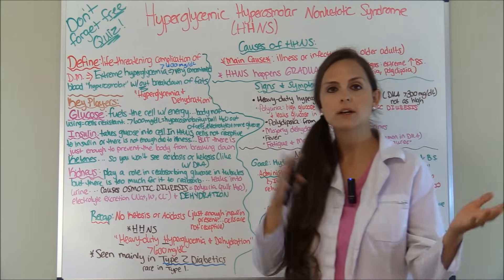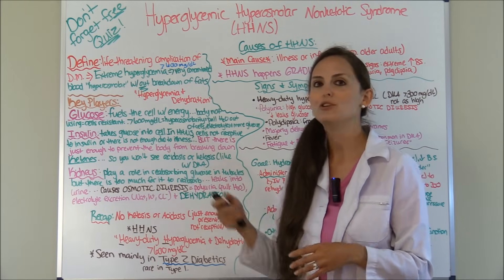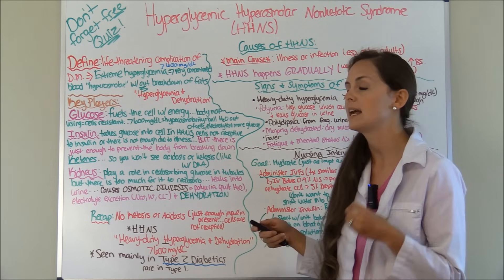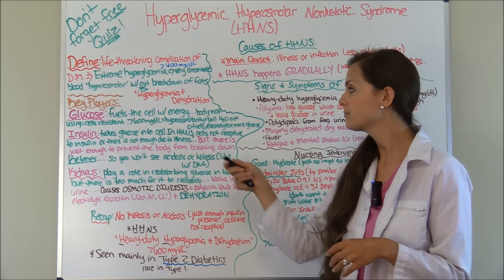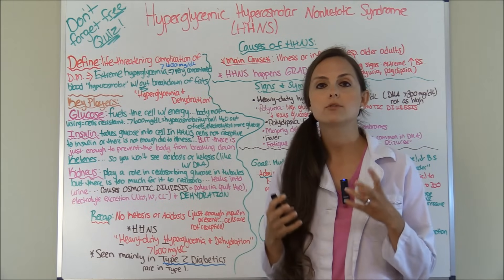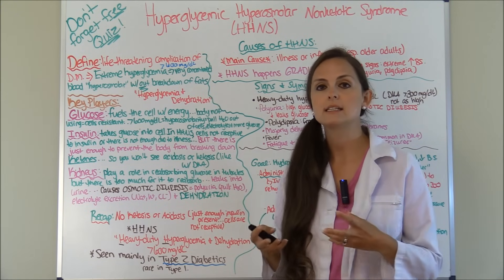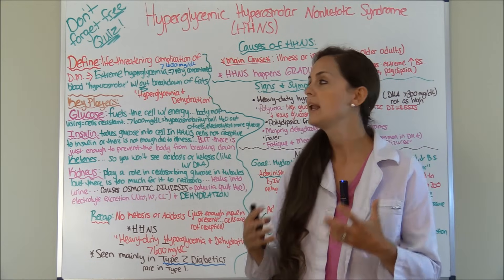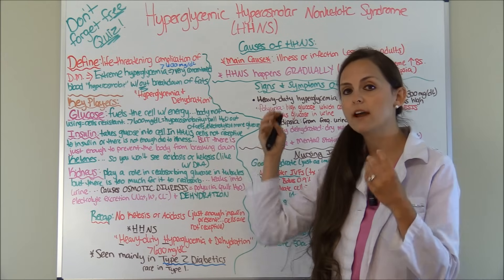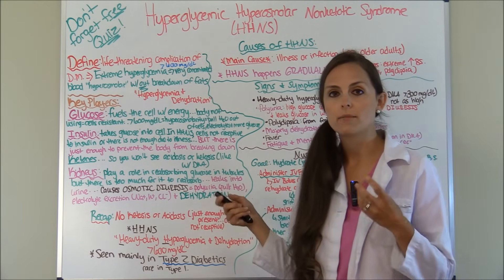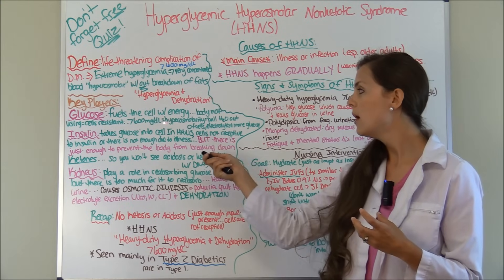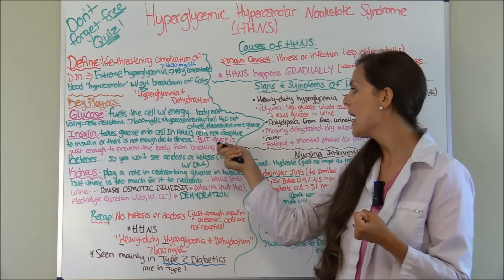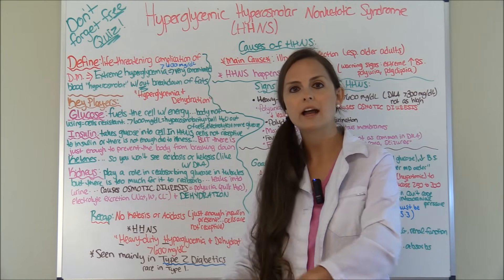Let's talk about the key players — the patho. Number one key player is glucose, which is sugar and energy for your cells. In HHNS, the body is resistant to using glucose through insulin. Insulin takes glucose into the cell, but here the cells are resistant to insulin, so you have all this glucose hanging out in the body. The glucose becomes very concentrated, causing hyperosmolarity, which pulls water out of the cells — the cells shrivel up and become dehydrated, and electrolytes and glucose move into the blood, driving glucose levels even higher.